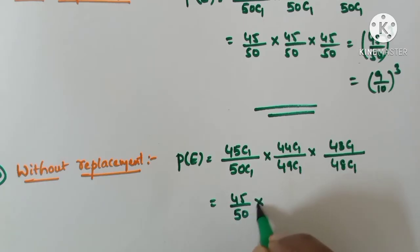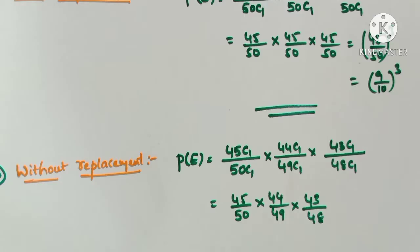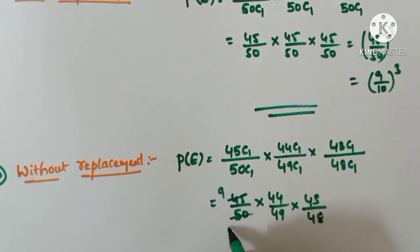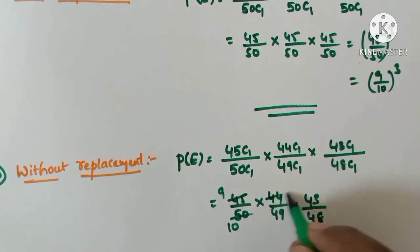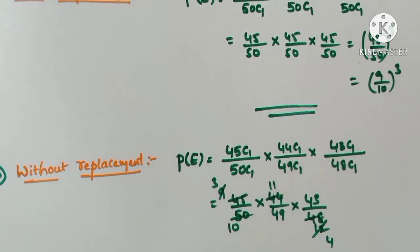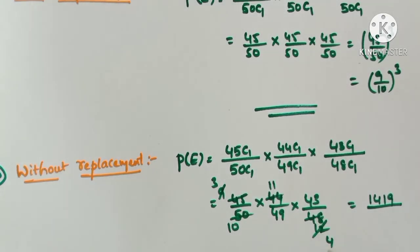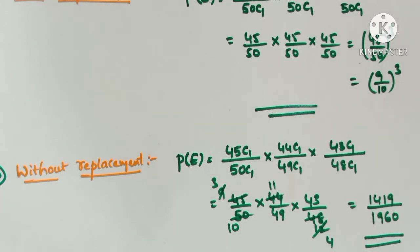So probability of E (without replacement) = (45/50) × (44/49) × (43/48). After cancellation this simplifies to (9×44×43)/(10×49×48). This is the probability of the event that the three screws are non-defective without replacement.